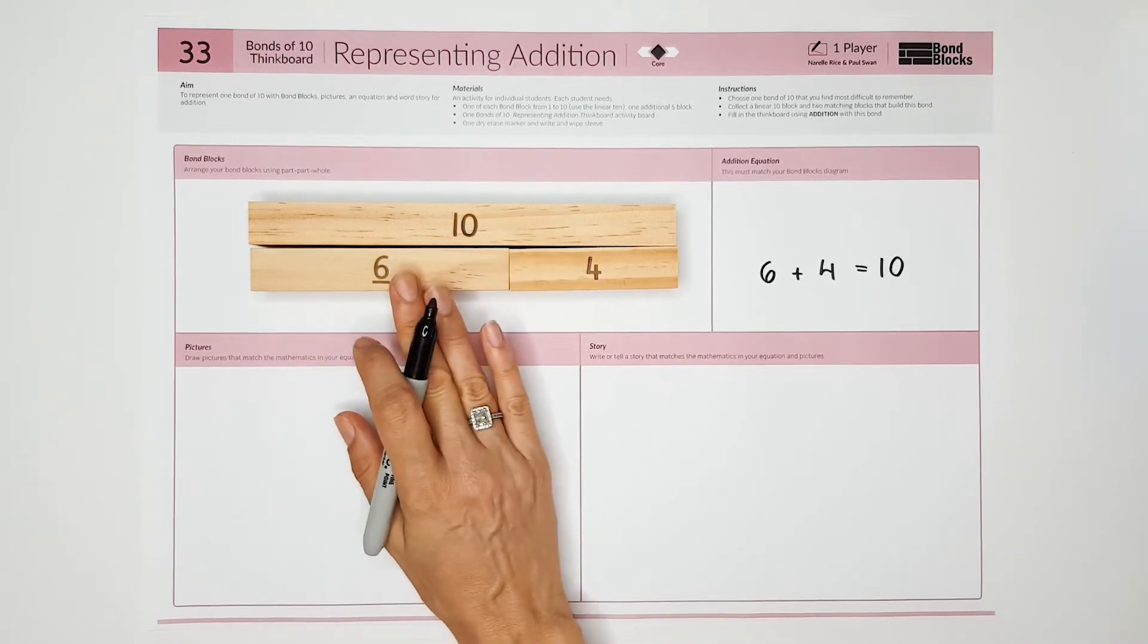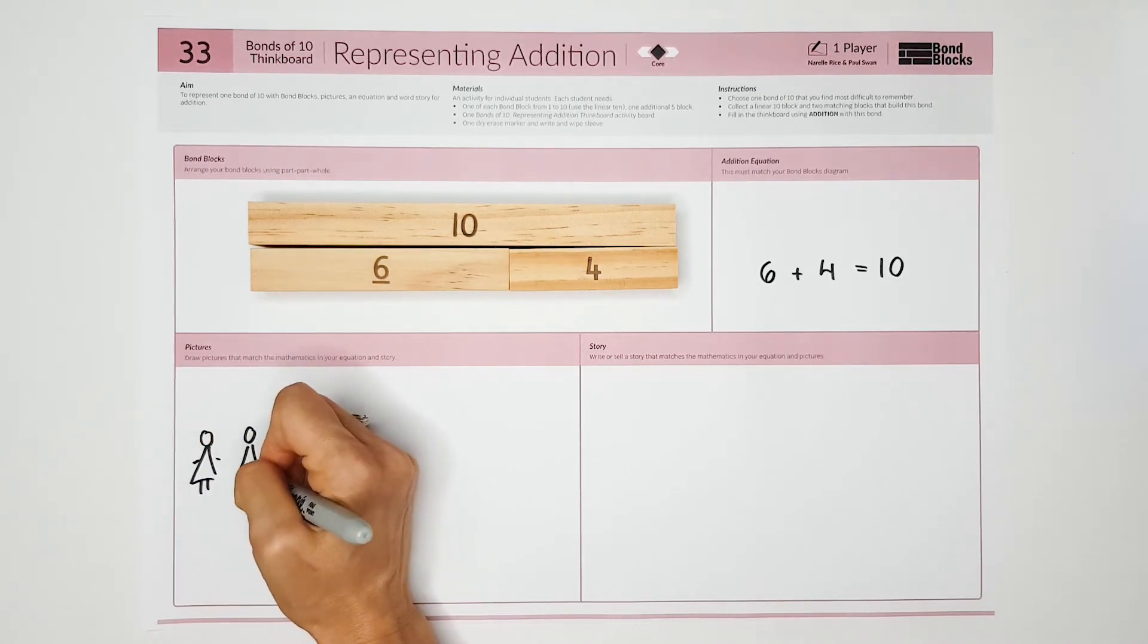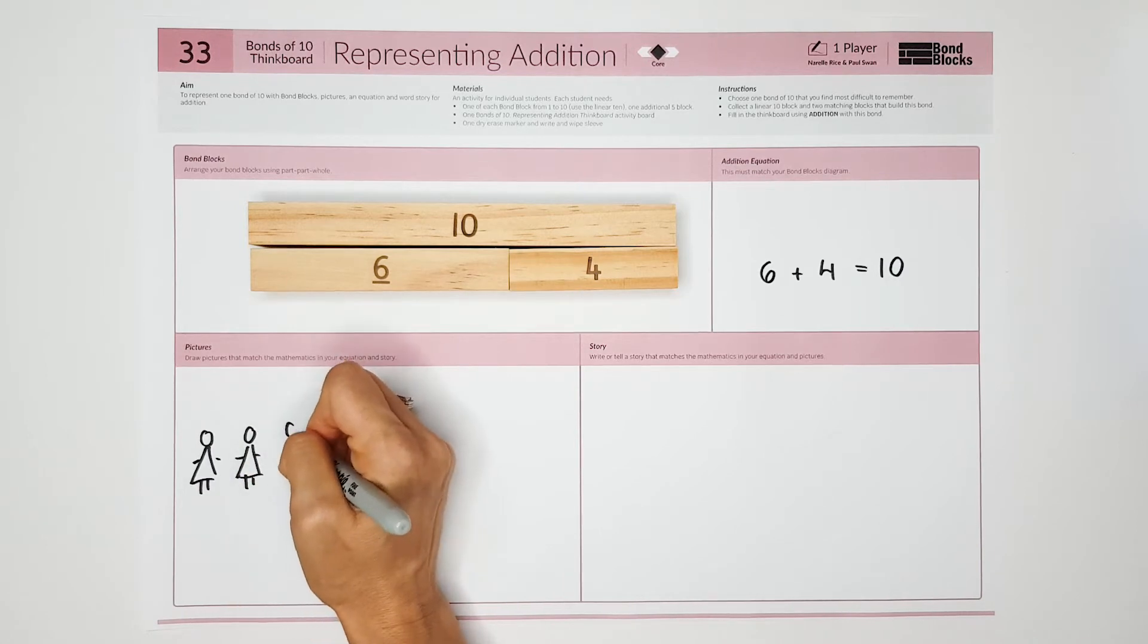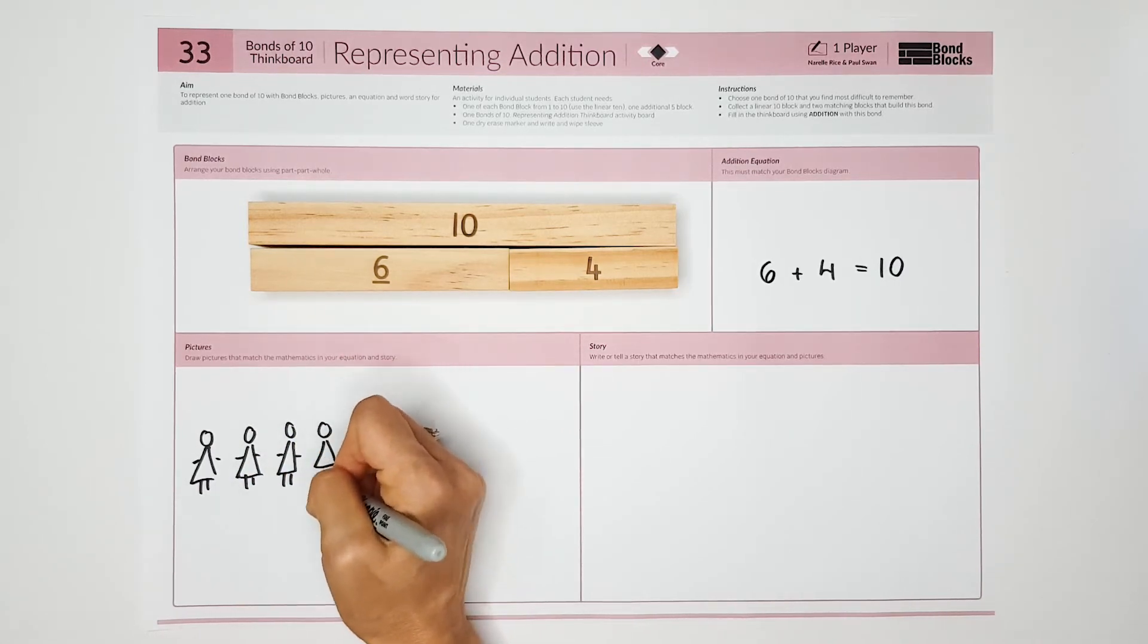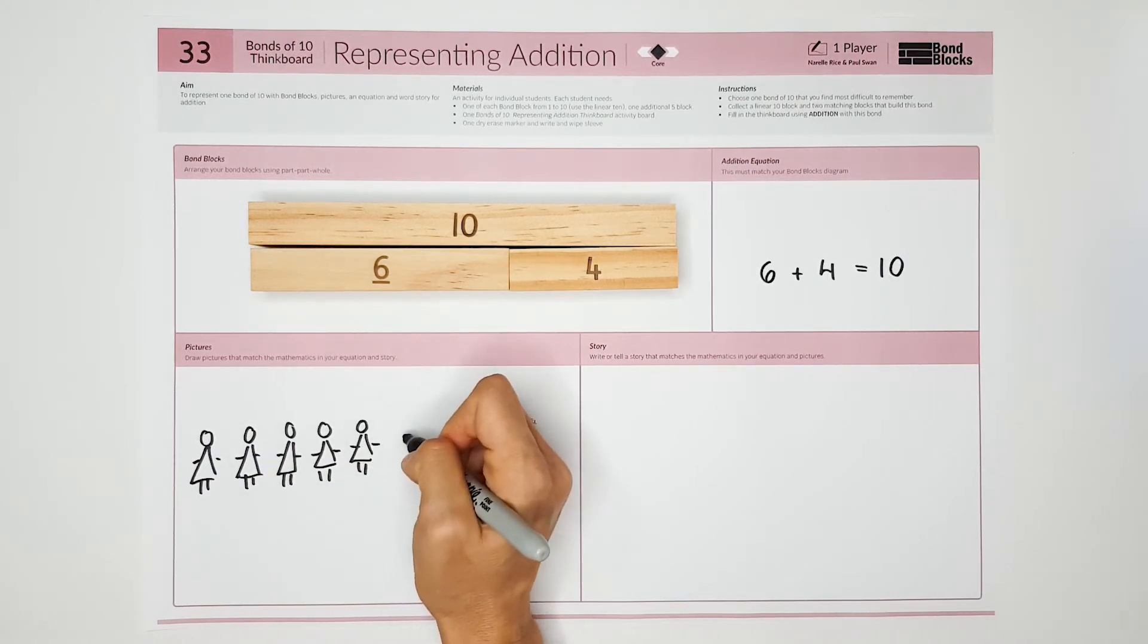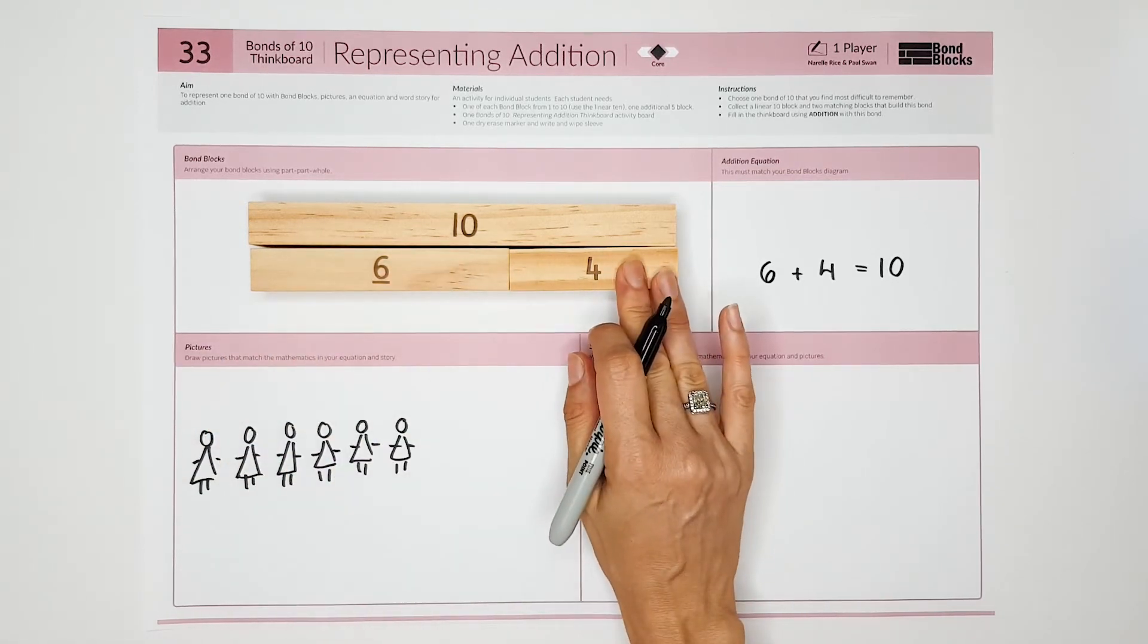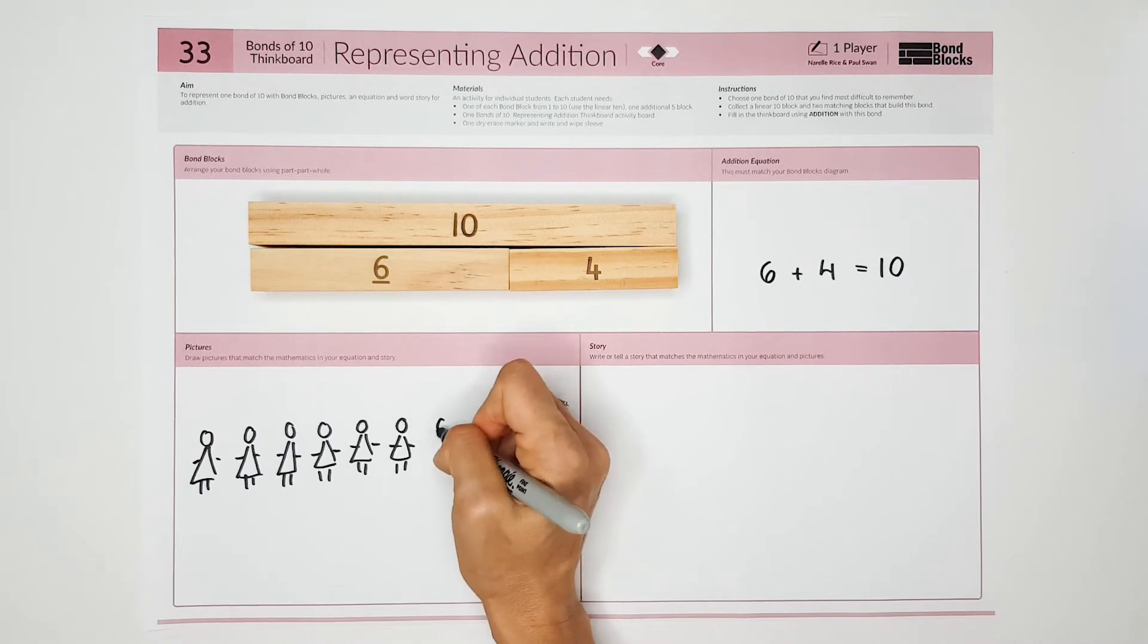I'm going to draw a picture about children lining up after lunch when the bell goes. I'm going to draw 6 girls lining up: 1, 2, 3, 4, 5, 6. So there's my part of 6, and I'm going to draw a part of 4 with 4 boys.